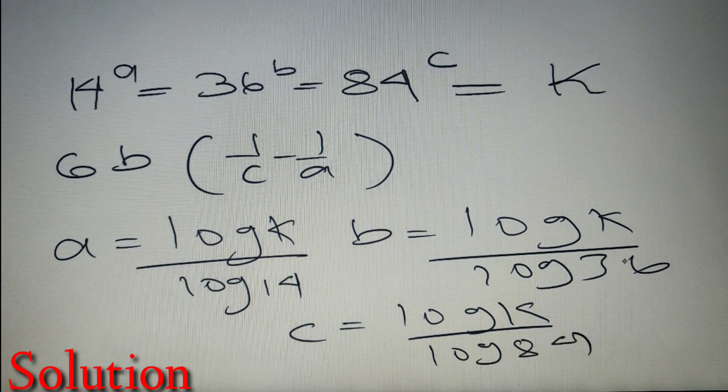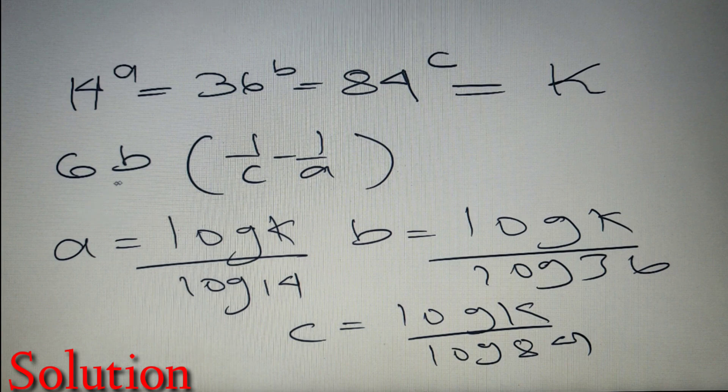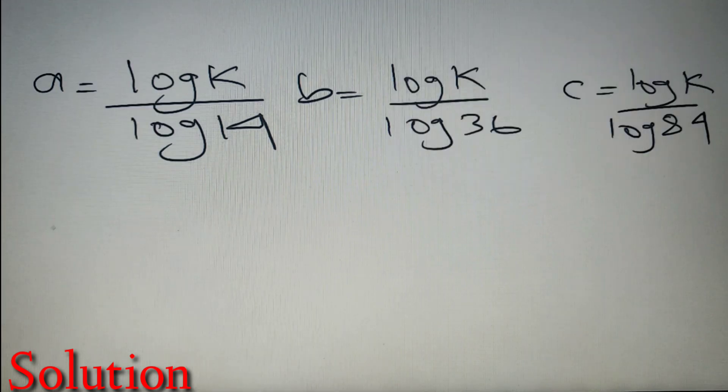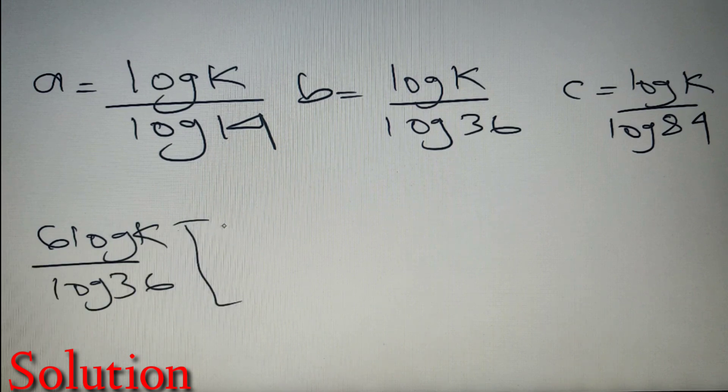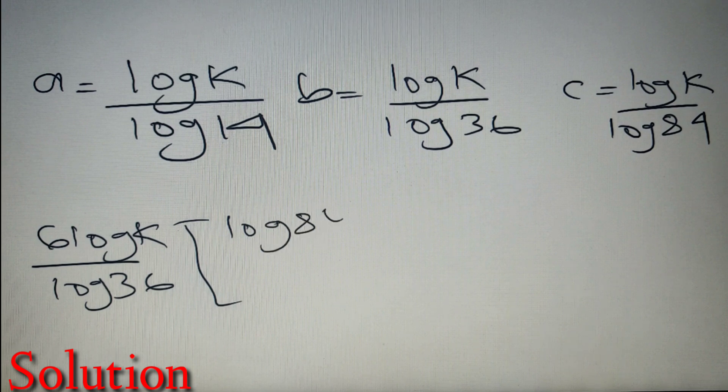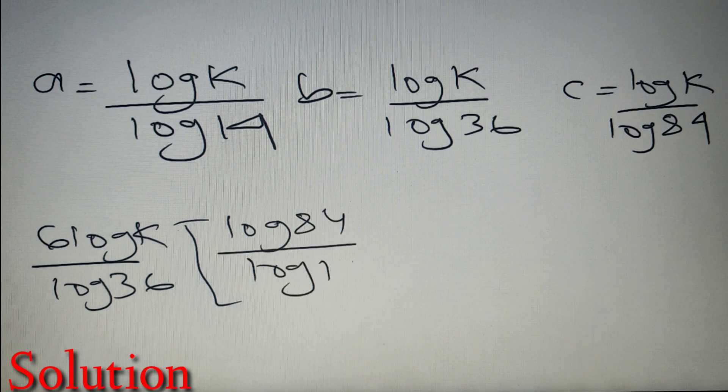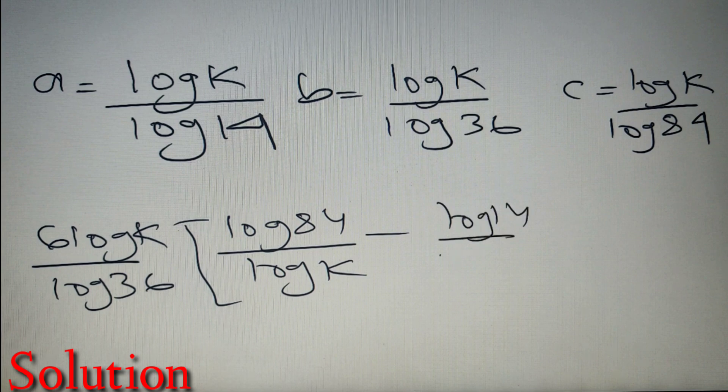So we have got the respective values of A, B, and C, and now let's move on to find out the value of 6B into 1 by C minus 1 by A. 6B is equal to 6 log K divided by log 36. 1 by C is equal to log 84 by log K, and minus 1 by A is equal to log 14 by log K. So we have to find the value of this.